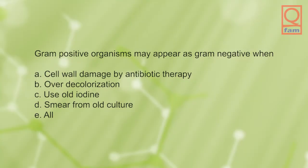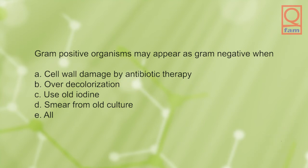Gram positive organisms may appear as gram negative when: A) cell wall damage by antibiotic therapy, B) over-decolorization, C) use of old iodine, D) smear from old culture, E) all. The answer is B, over-decolorization.